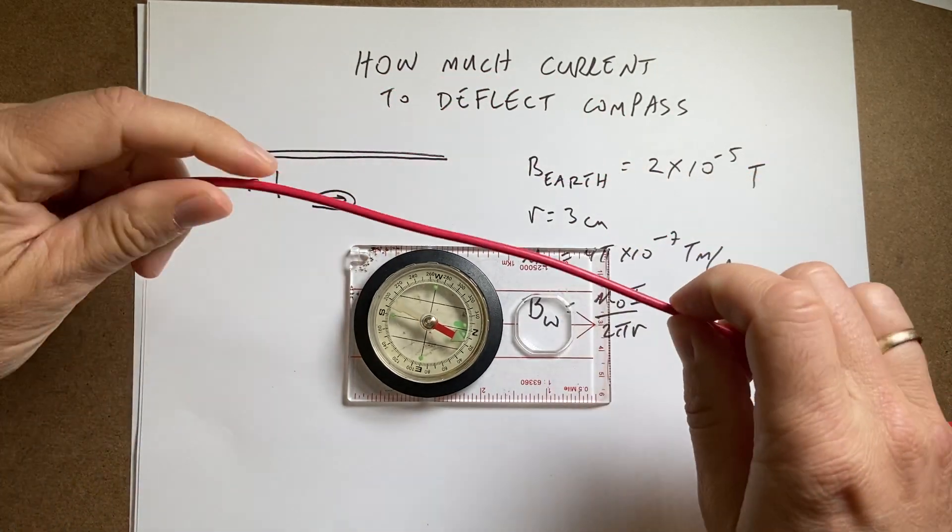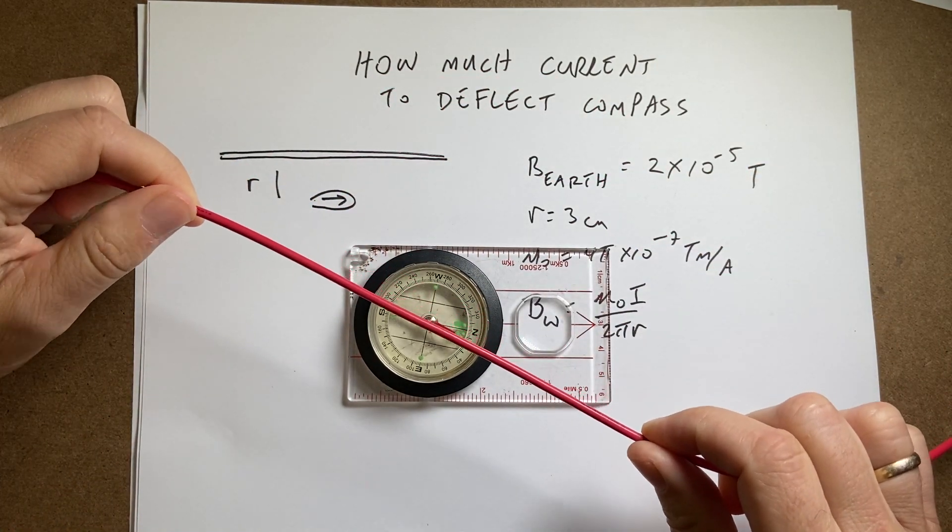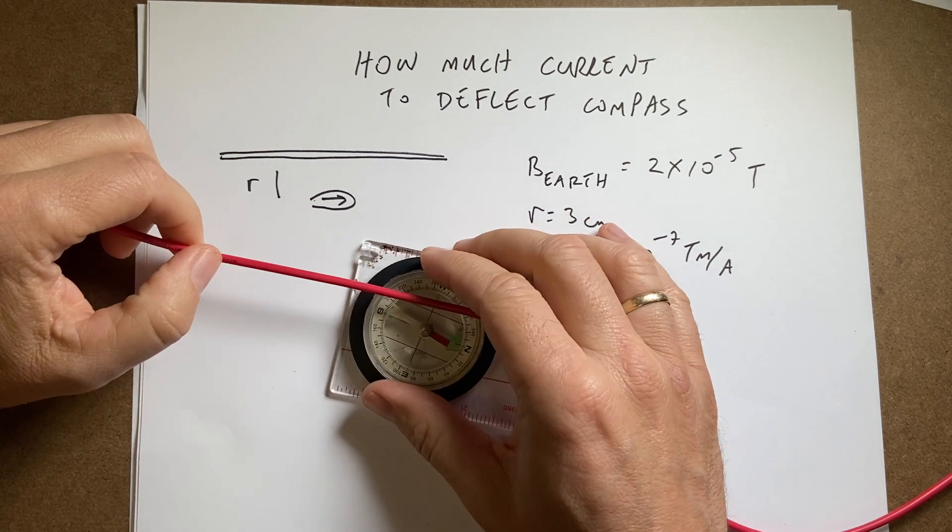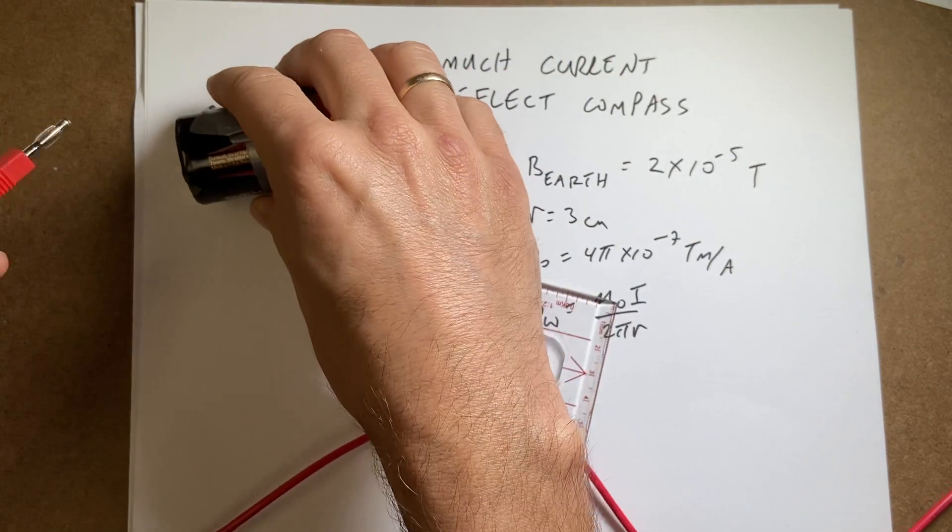So the wire is like this over the compass and I want that to deflect 40 degrees. So let's just hook this up. I actually brought a battery.